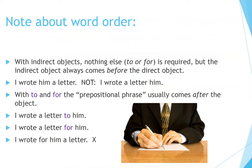Note about word order. With indirect objects, nothing — no 'to' or 'for' — is required, but the indirect object always comes before the direct object: 'I wrote him a letter,' not 'I wrote a letter him.' With 'to' and 'for,' the prepositional phrase usually comes after the object: 'I wrote a letter to him' / 'I wrote a letter for him,' not 'I wrote for him a letter.'